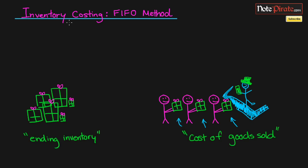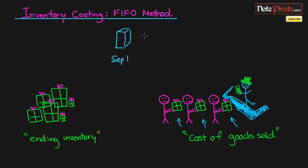First off, what is FIFO? What is this acronym? Well, it stands for First In, First Out. What that basically means is — let's say we're a supermarket selling milk. This is our first order of milk that we've purchased, purchased on September the 1st, and then we made another purchase.